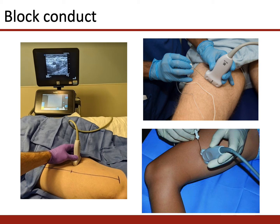For the ergonomics of performing the block, the operator stands on the same side as the side to be blocked, with the ultrasound machine on the opposite side of the patient. We use an in-plane technique with the linear transducer. Ideally, the patient has their leg externally rotated with the knee bent, to allow the superficial femoral artery and saphenous nerve to become more superficial.